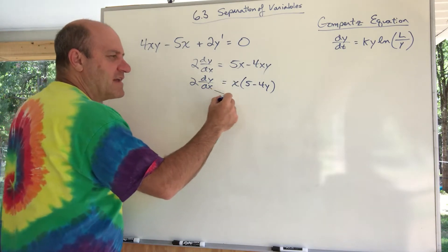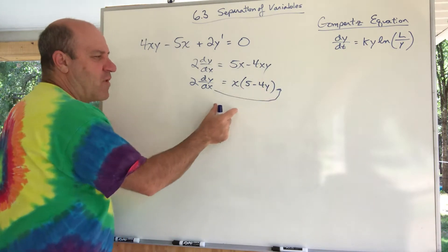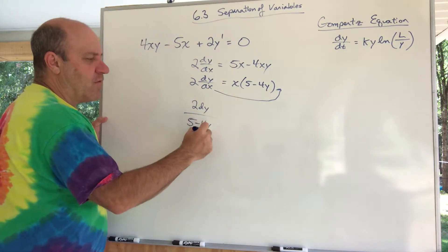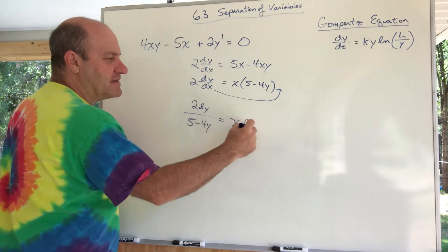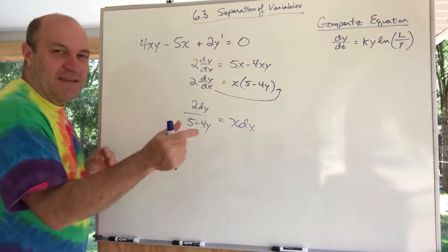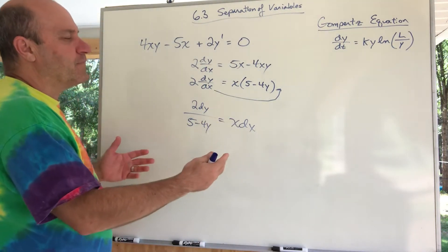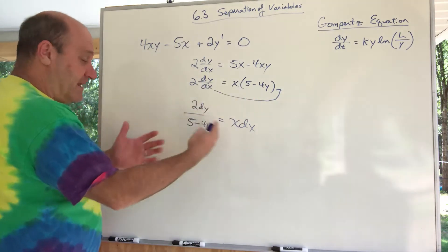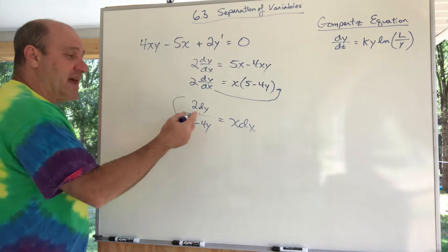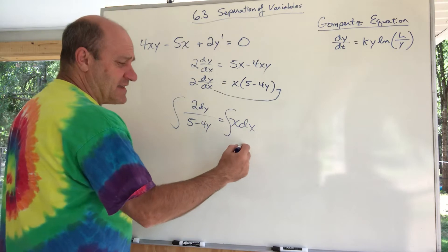I'm going to separate and integrate. I want to take the dx and multiply it over here, and take that quantity (5 minus 4y) and divide it here. I'll leave the 2 on top over (5 minus 4y), and this equals x dx. That took a little work — the key was factoring — but that algebra got it separated. Now I'll integrate both sides: integrate the left side with respect to y, and the right side with respect to x. The right side is easy: x squared over 2 plus C.